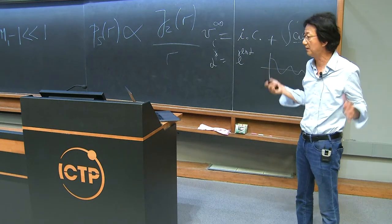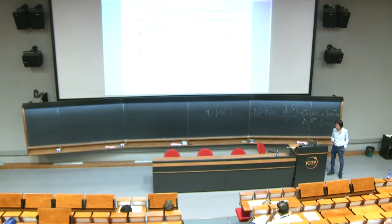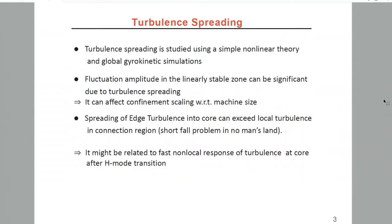In magnetic fusion business, it's very important to know how future large machines will behave. Spreading of edge turbulence into the interior core can exceed local turbulence in the connection region, and this is called the short fall problem in no man's land.